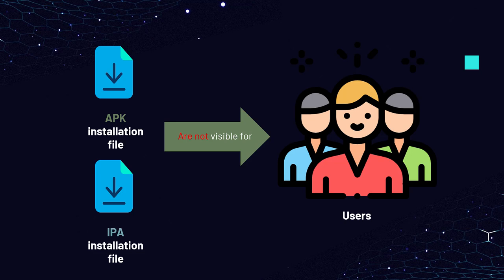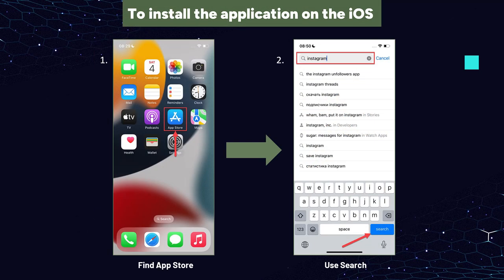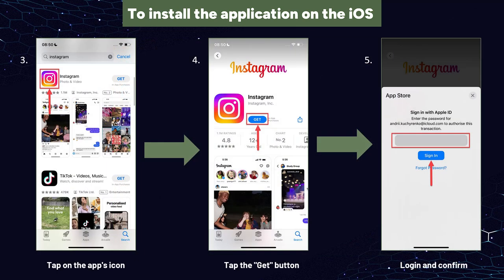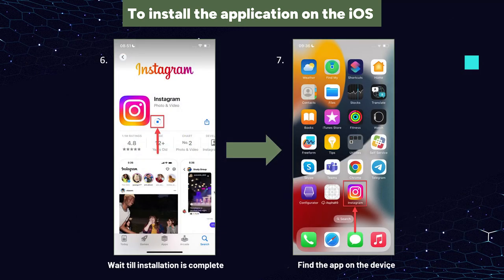To install the application on iOS, follow these steps: open the App Store on your iOS device, use the search function to find the app you want to install, tap on the app's icon to view its details, tap the Get button and then confirm your action using Face ID, Touch ID, or device passcode. The app will be downloaded and installed on your device. Once the installation is complete, you can find the app on your home screen.